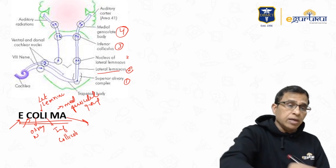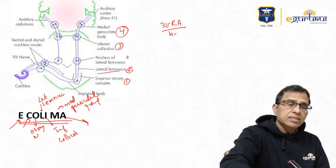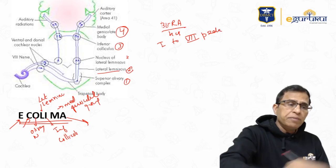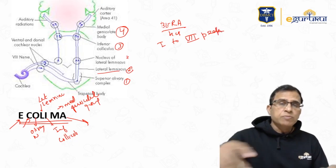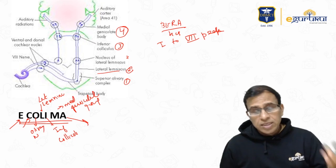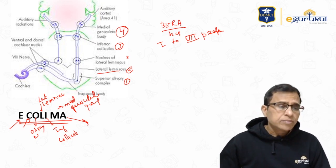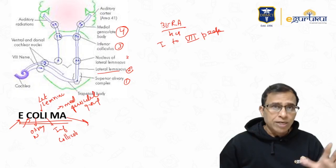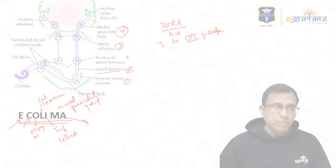This question is especially relevant because of BERA — the Brainstem Evoked Response Audiometry investigation. BERA has peaks from one to seven, and different parts of the auditory pathway are responsible for different peaks. That is what they ask you — which peak of BERA corresponds to which part of the auditory pathway.